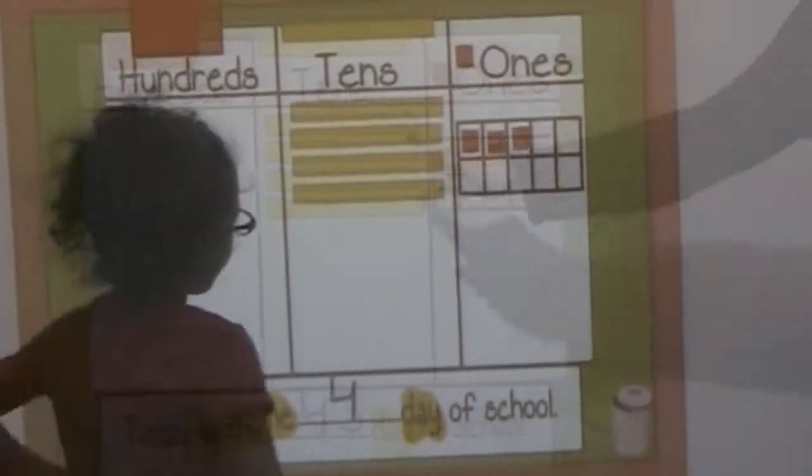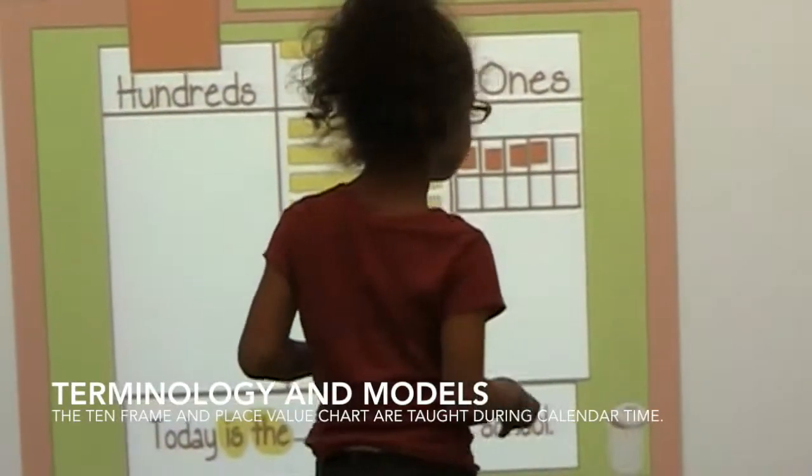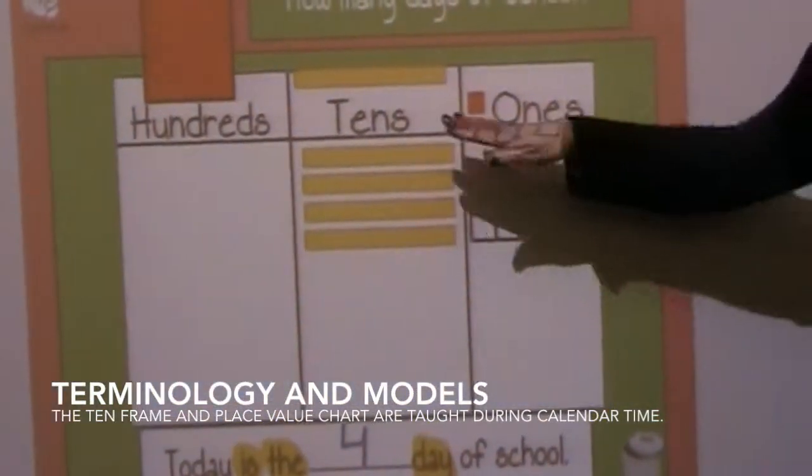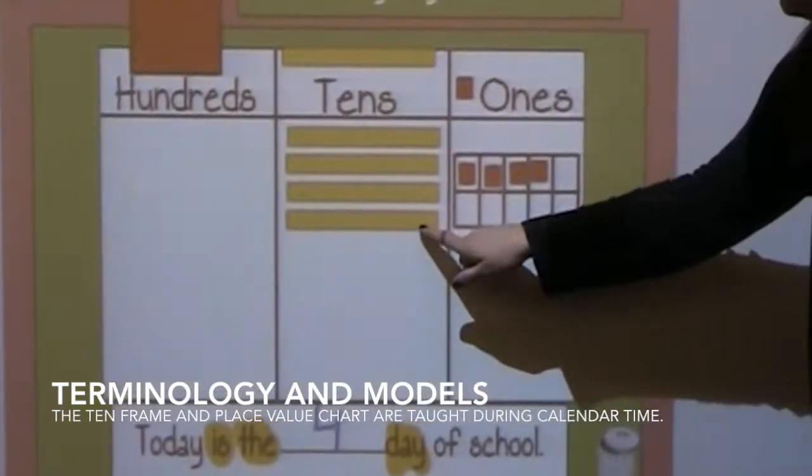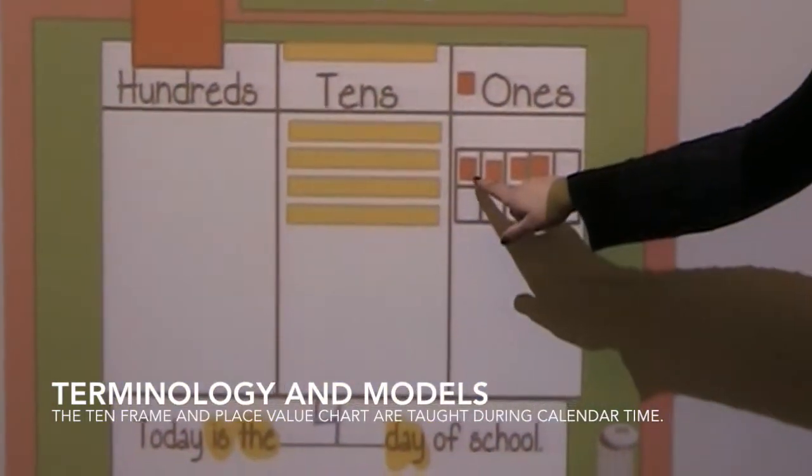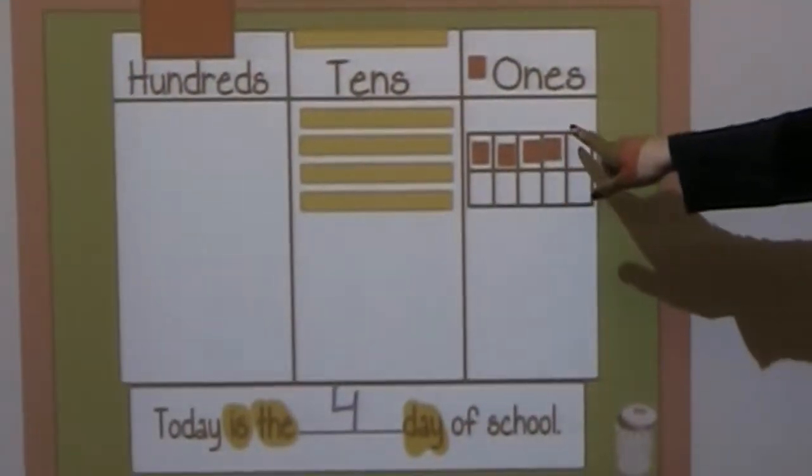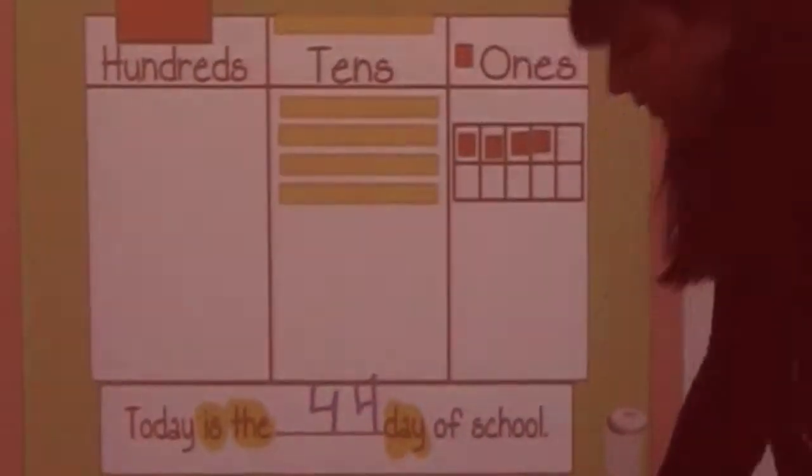This is new, so put it on the ten frame next to the three. Perfect. So this is new. So how many are there now? Four. Not just four, but forty-four. Ten, twenty, thirty, forty, forty-one, forty-two, forty-three, forty-four. So we have 44 days of school. Let's make everything match, my friends. Forty-four.